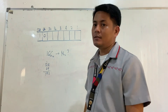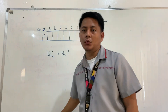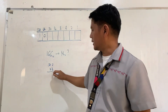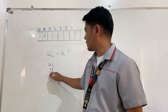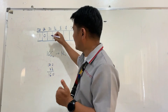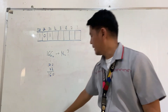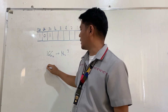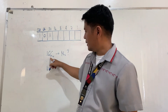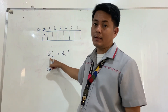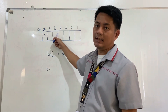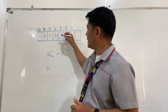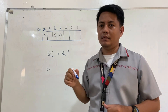How about 32? We try: 128 plus 32 is 160, so we do need 32 — turn it to 1. How about 16? We already have 160 and our target is 166, so we do not need 16 — turn it to 0. We only need 6 more, so we do not need 8 — turn it to 0.